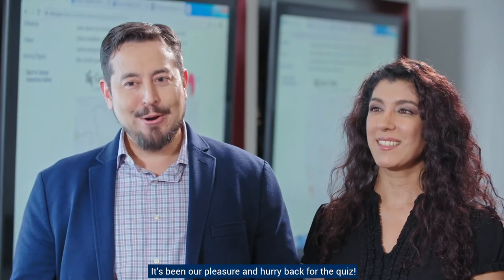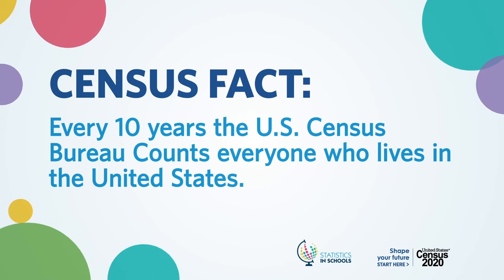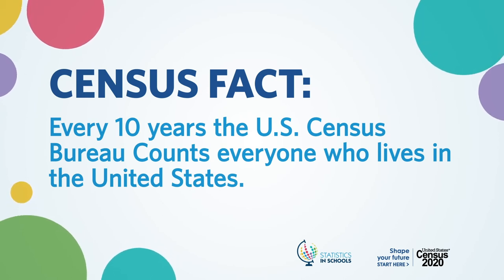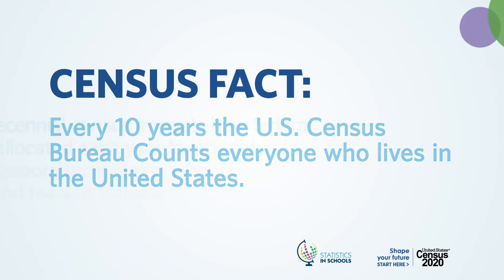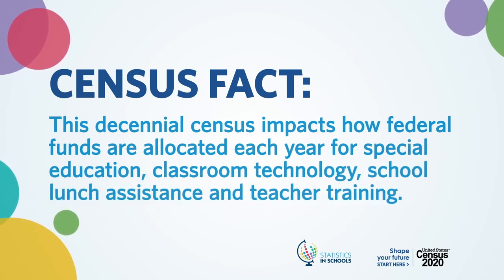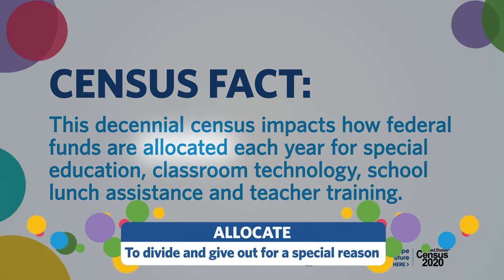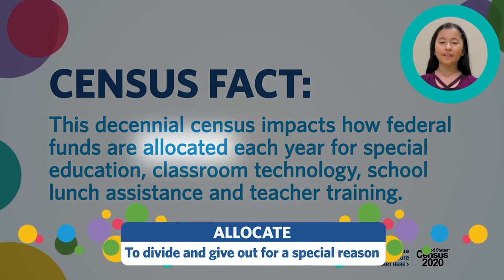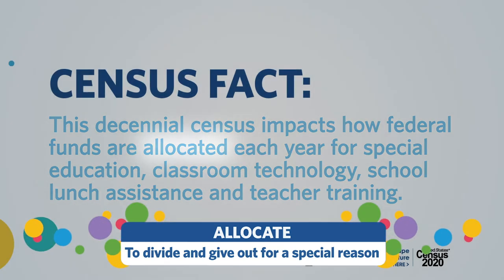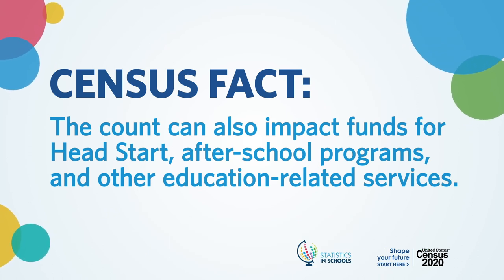It's been our pleasure, and hurry back for the quiz. Every 10 years, the U.S. Census Bureau counts everyone who lives in the United States. This decennial census impacts how federal funds are allocated each year for special education, classroom technology, school lunch assistance, and teacher training. Allocate means to divide and give out for a special reason. The count can also impact funds for Head Start, after-school programs, and other education-related services.